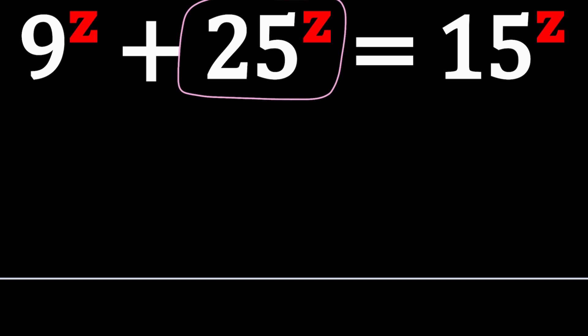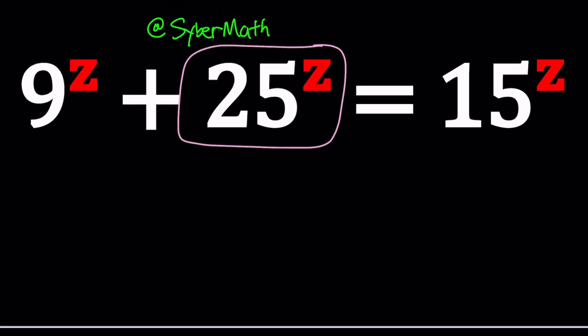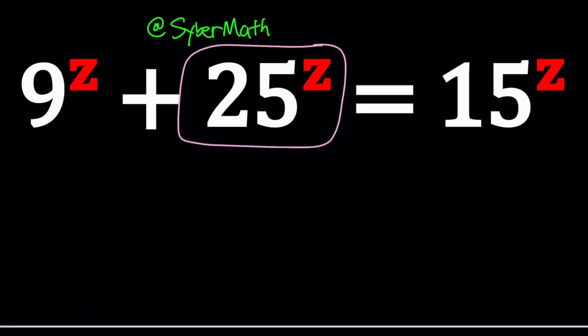So let's go ahead and divide everything by 25 to the power Z, because that's going to give us something nice. By the way, how do we know that this equation is nicely solvable? Let me give you a secret. Are you ready? Okay, here you go.